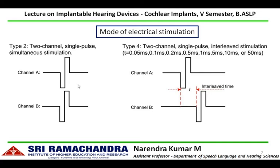Pulsatile stimulation can be delivered in two modes: simultaneous stimulation or non-simultaneous stimulation. In simultaneous stimulation, all electrode contact areas fire or get activated at the same time. In non-simultaneous stimulation, at any given point in time no two channels or electrode contact areas are active simultaneously — this is called non-simultaneous or interleaved stimulation.